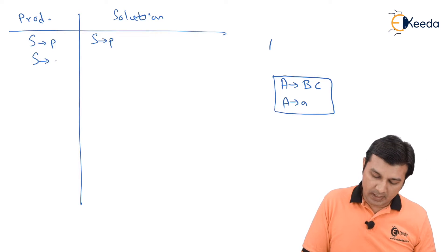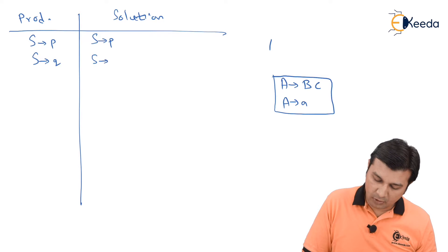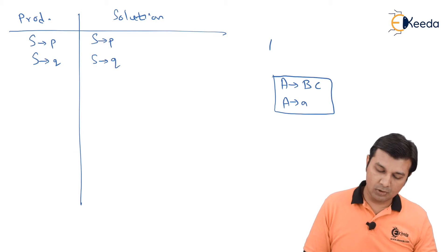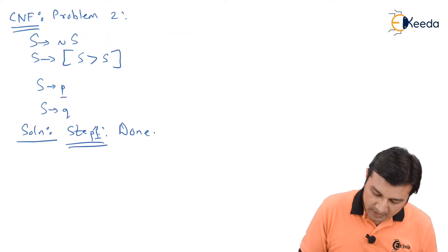Next one, S gives small q. This is also in the Chomsky normal form. So we add on this also to the solution. The next production, let's see what we have. We are done with p, we are done with q. Now, let us start with this production.